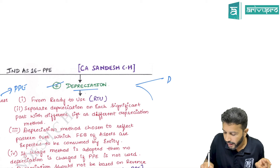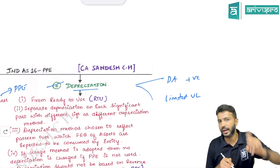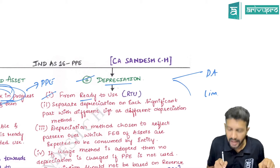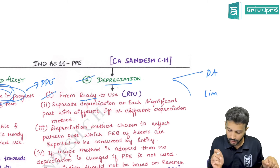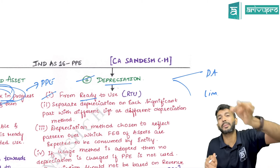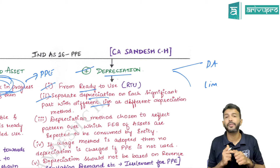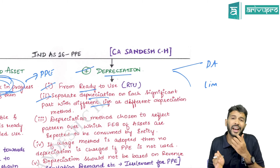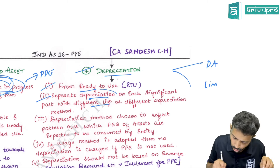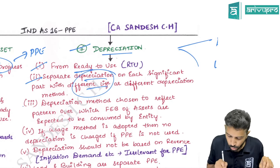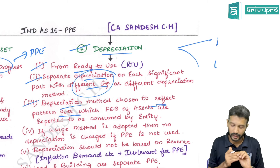Depreciation is charged only when two criteria are met: depreciable amount (DA) must be positive, and useful life must be limited. Depreciation starts from the day the asset is ready for use or available for use — actual use is irrelevant. The depreciable amount should be allocated on a systematic basis over the useful life. If an asset has different components with different useful lives, depreciation must be calculated separately for each component — this is component accounting.